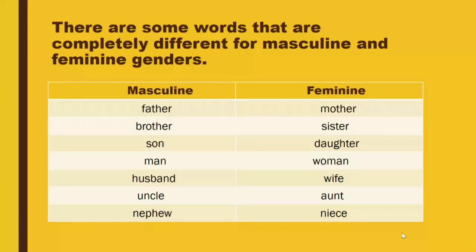Masculine: father — Feminine: mother. Masculine: brother — Feminine: sister. Masculine: son — Feminine: daughter. Masculine: man — Feminine: woman. Masculine: husband — Feminine: wife. Masculine: uncle — Feminine: aunt. Masculine: nephew — Feminine: niece.